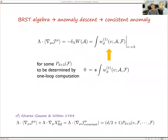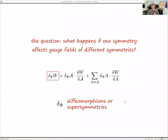The main reference for computing the anomaly polynomial is Alvarez-Gaumé and Witten, but one thing to point out: what they computed is not the consistent anomaly but rather the covariant anomaly, which is a local modification of the consistent current by some local functional of the external gauge field. This is called the Bardeen-Zumino current, and it will appear everywhere today.